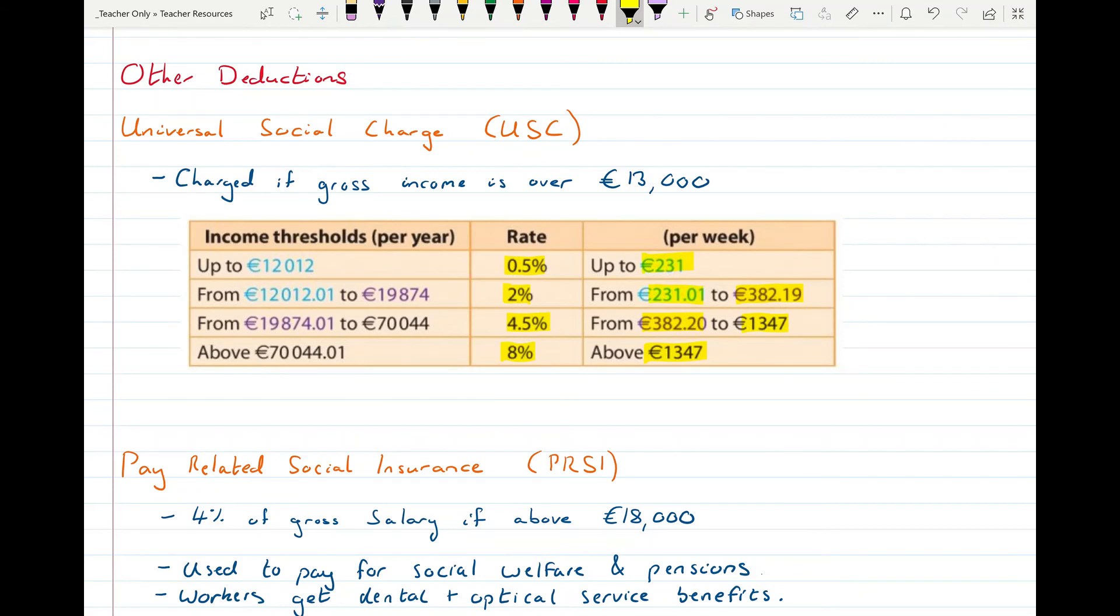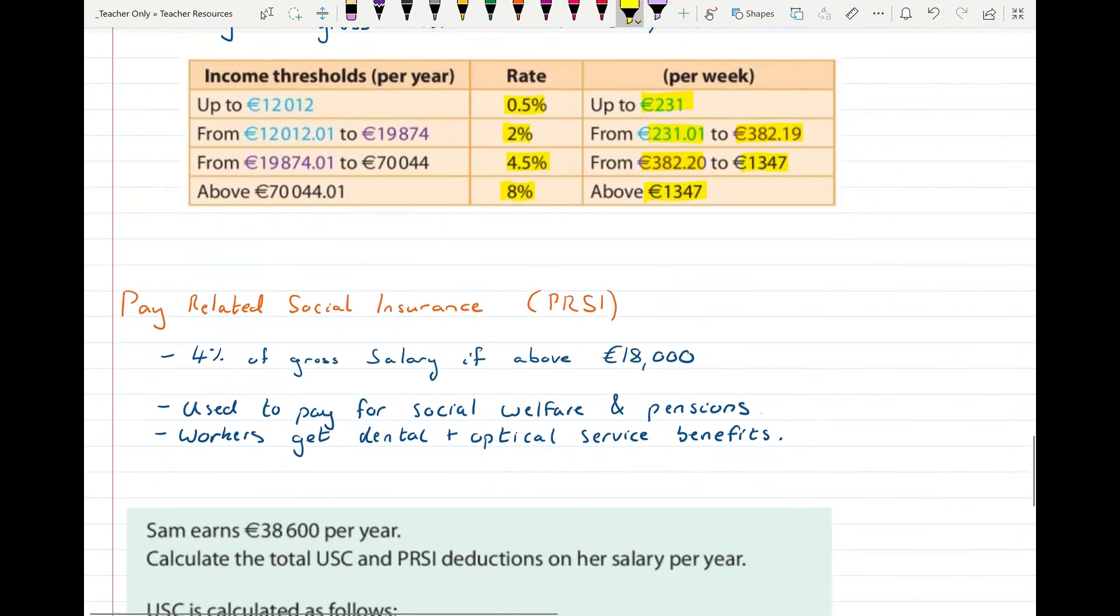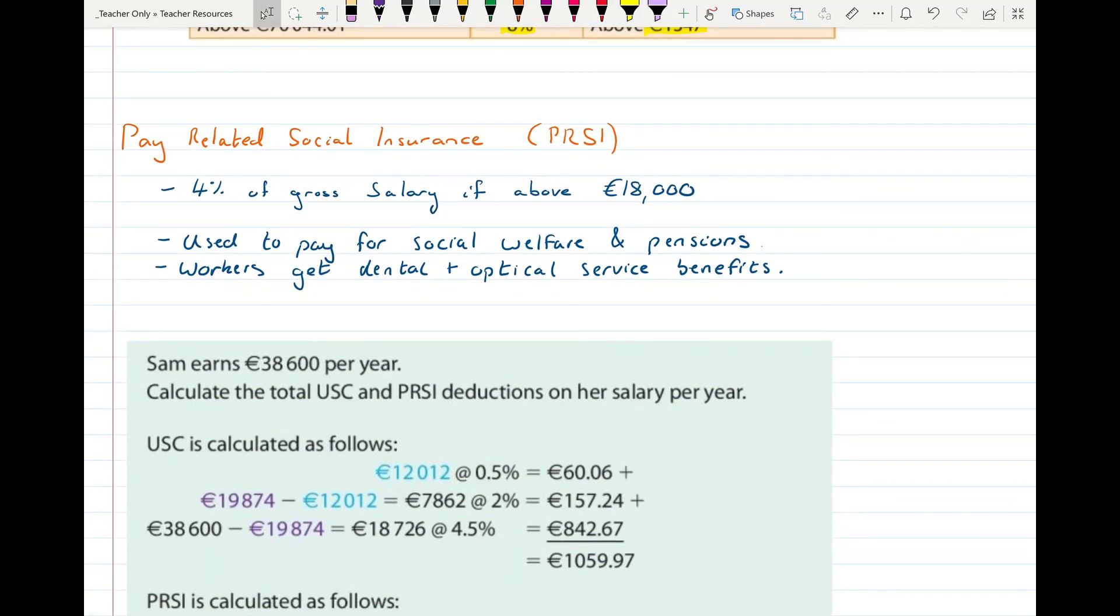You'll have to go through the different brackets step-by-step to work out the USC. And then the PRSI is 4% of your gross salary if it's above €18,000. So again, if you're not earning €18,000 a year, you won't be paying any PRSI. The PRSI also depends on what class you're in. Most people are in PRSI class A, but if you maybe have your own business or things, you might be in a different class or if you're working a certain section of the economy, you might be in a different class of PRSI. This is used to pay for like social welfare, child benefit, pensions, things like that. So it's called pay-related social insurance. So it pays for kind of social things. And you can also use your PRSI to get like dental appointments and go to the opticians and things like that. But you need to build up a good bit of PRSI before you can do that. So you need to be working about three, four years full time in order to get those benefits. But then you get to use them every year.